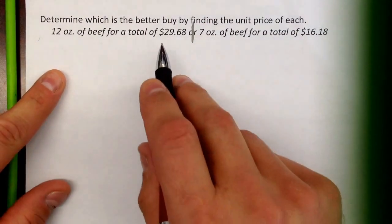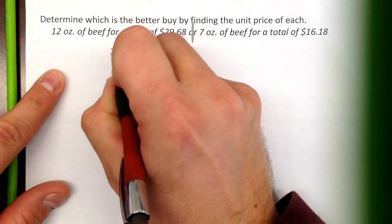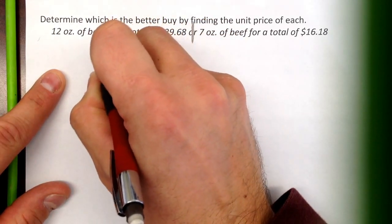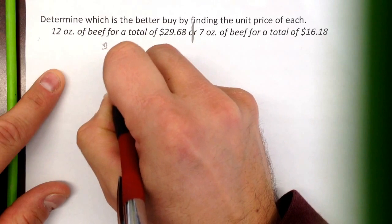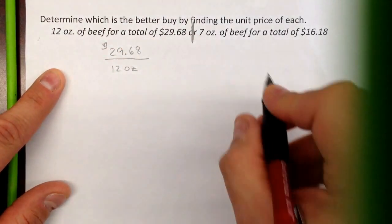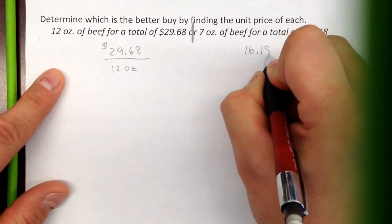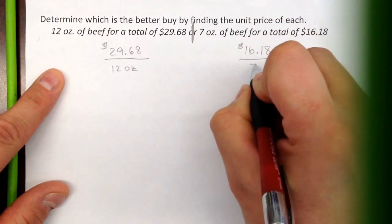So we have some ground beef here. We talked about money being on top. So $29.68 per 12 ounces, or the other option is the $16.18 for 7 ounces.